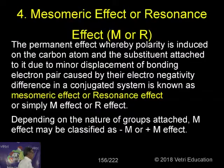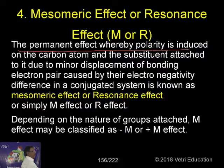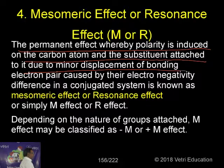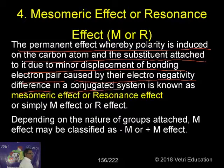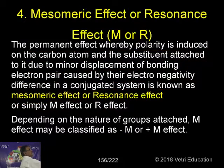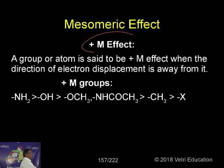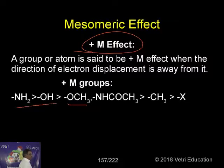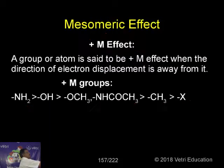Let us now see the full explanation. This is the mesomeric effect. The permanent polarity induced on the carbon atom and the substituent attached — the minor displacement of the bonding electron pair — caused by the electronegativity difference in a conjugated system is known as the mesomeric effect. There are two types: −M and +M effect. The +M groups order is: NH2 > OH > OCH3 > CH3 > H.